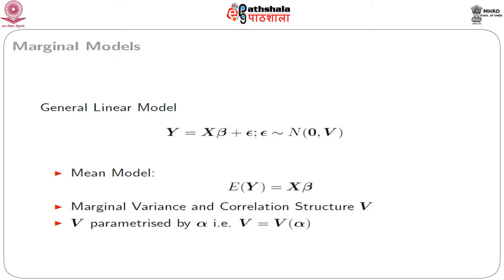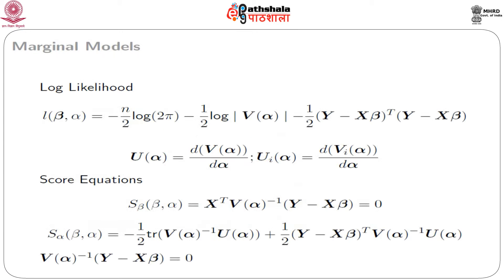Recall that we have the general linear model of the form y = Xβ + ε, where ε follows Normal(0, V). This model specifies the marginal mean E(y) = Xβ and the marginal variance-covariance structure V(y) = V. Assuming α denotes the parameter in V, i.e., V = V(α), the log-likelihood can be written as l(β, α) = −(n/2)log(2π) − (1/2)log|V(α)| − (1/2)(y − Xβ)ᵀ V(α)⁻¹ (y − Xβ).